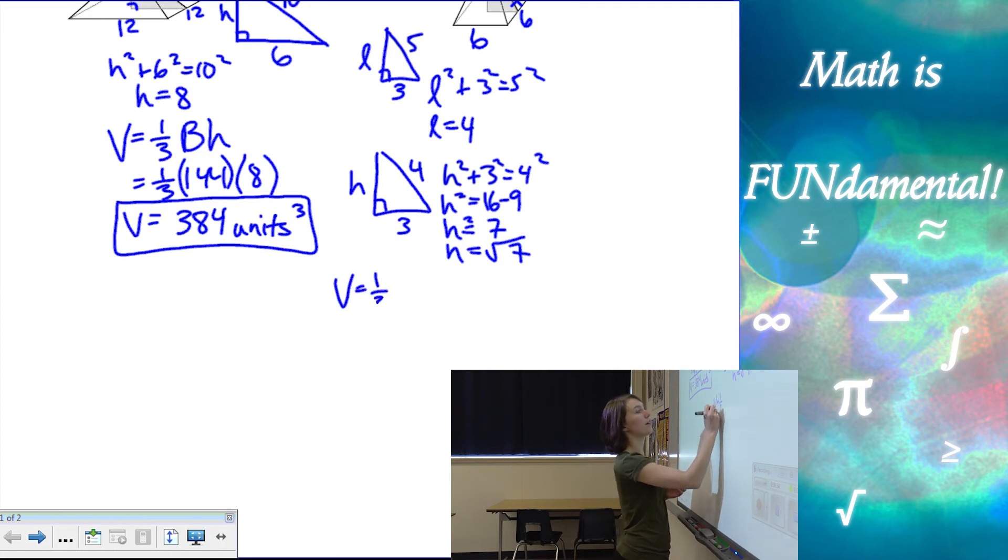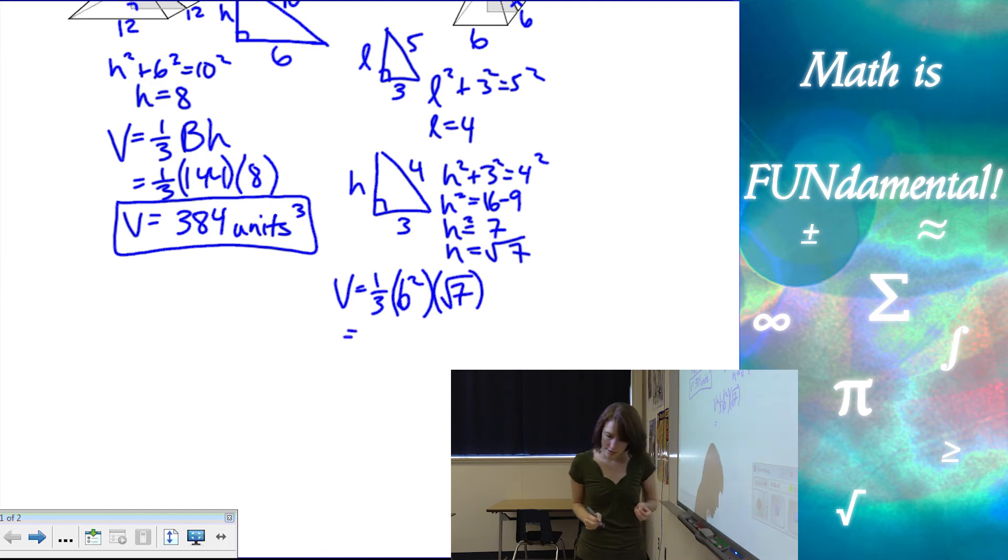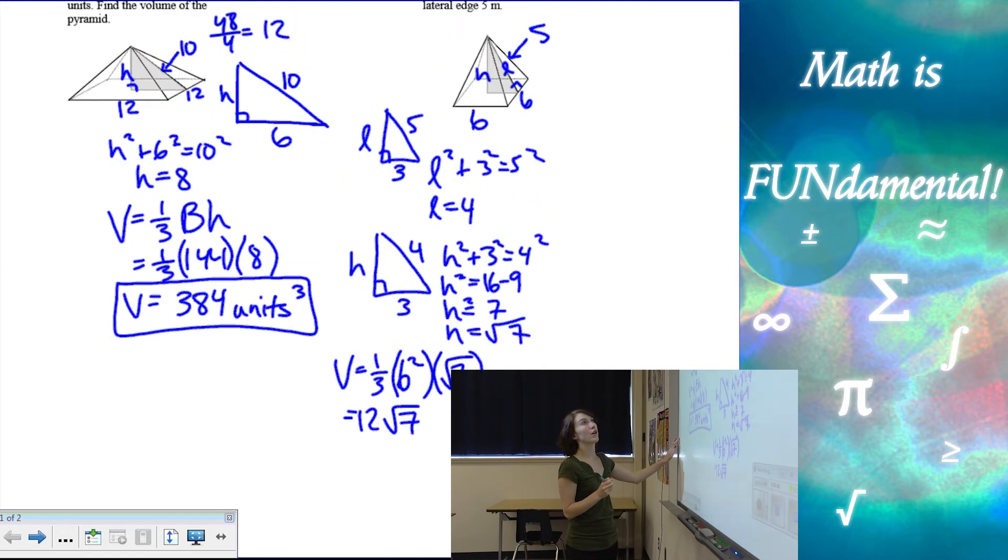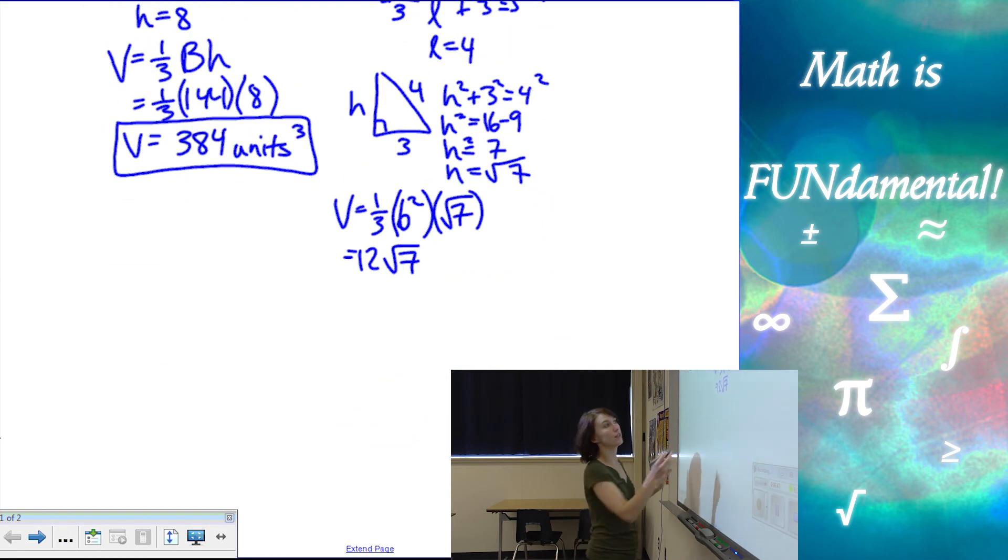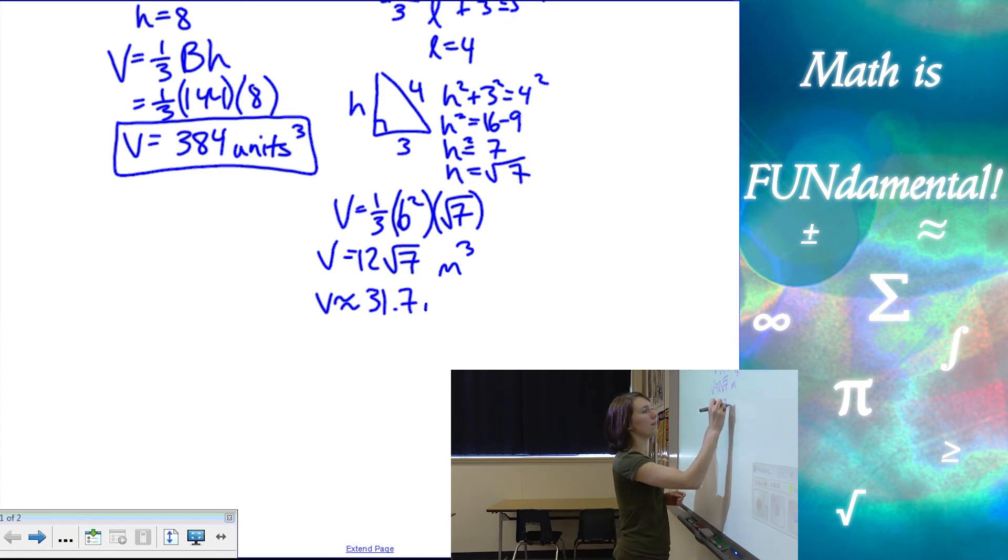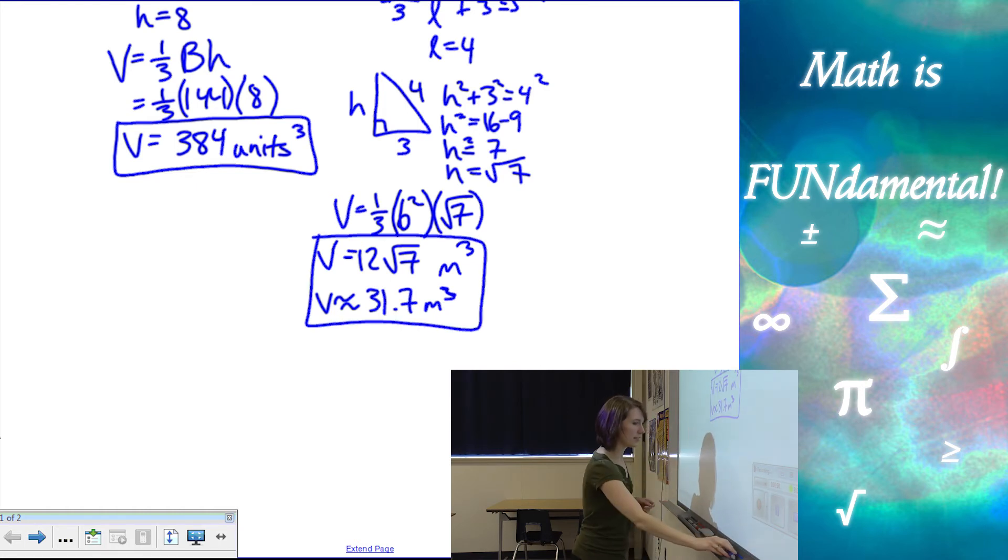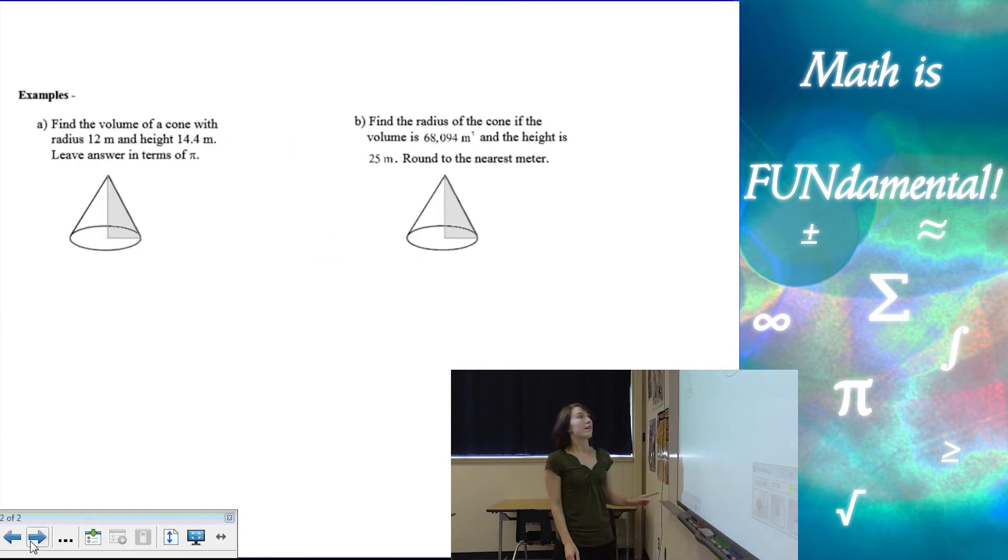So if h is the square root of 7, then my volume is 1/3 area of the base, which is 6², times the height, which is √7, and that's going to be 12√7. Our units, if we go back up to the problem, were meters, so meters cubed, or approximately, if it asks you to approximate, then we would have approximately 31.7 meters cubed. All right, we have a couple more examples. So those were our pyramids, now let's talk cones.